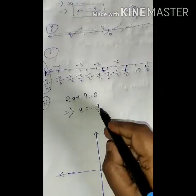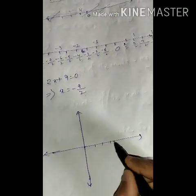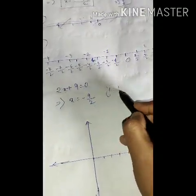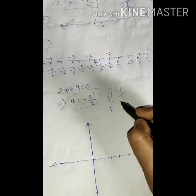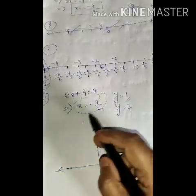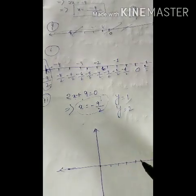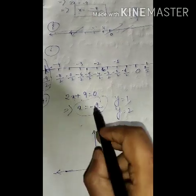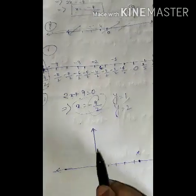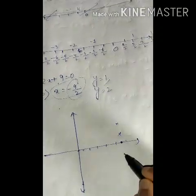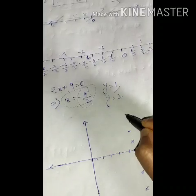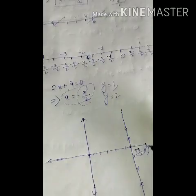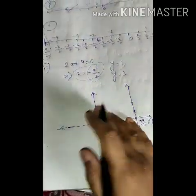We represent this in the Cartesian plane. When x value is fixed at minus 9 by 2, y value can be 0, 1, 2, any value. We determine the line where x is constant.